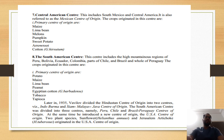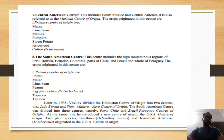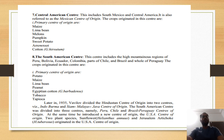In 1935, two new centers of origin were added. These include Indo-Burma and Siam-Malaya. South America was divided into three parts: Peru, Chile, and Brazil. So the total became 11 centers of origin.